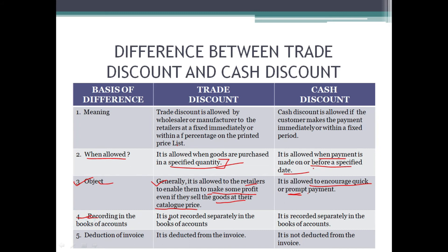Very important — please remember, trade discount is not accounted for in the books of account. हम इसे account for नहीं करते, जबकि cash discount को हम account for करते हैं, means इसको हम लिखते हैं। In my next lecture I will explain with an equation how we write trade discount and cash discount. Deduction from invoice में — trade discount is deducted from invoice and cash discount is not deducted from invoice.